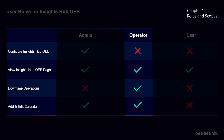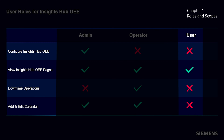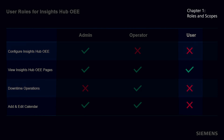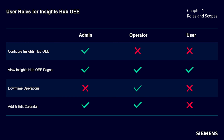With the operator role, you can view all the different end-user pages of the application and perform operations in downtimes and calendars. With this role, you are not allowed to adjust the configuration. The user role has the least permission of them all and only allows the user to view the different pages. To have access to all capabilities of the application, a user must have both the admin and operator role. Usually, a combination of two roles suffices the needs of the different users.